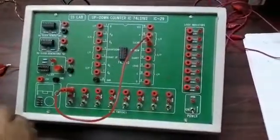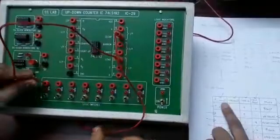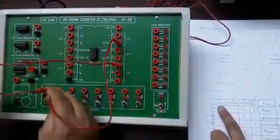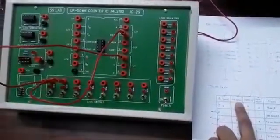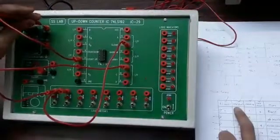According to the truth table, we are connecting clear, then load, then clock - either clock up or clock down. Next are the outputs - QD is the MSB bit.